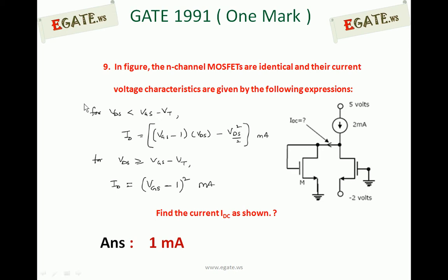If you clearly observe these equations: VDS less than VGS minus VT is the condition for the active region, linear region, or triode region for any N-channel MOSFET. Whereas VDS greater than or equal to VGS minus VT is the condition for the saturation or constant current region.